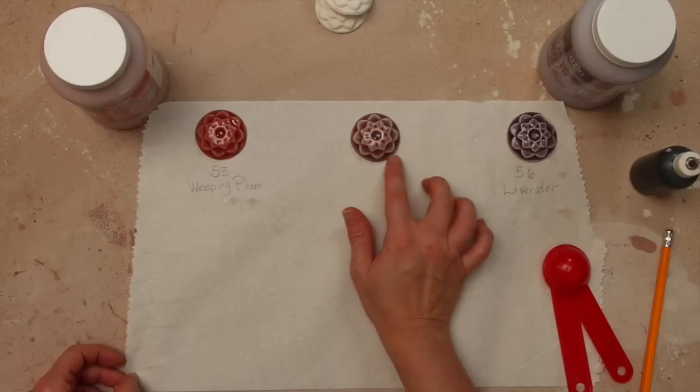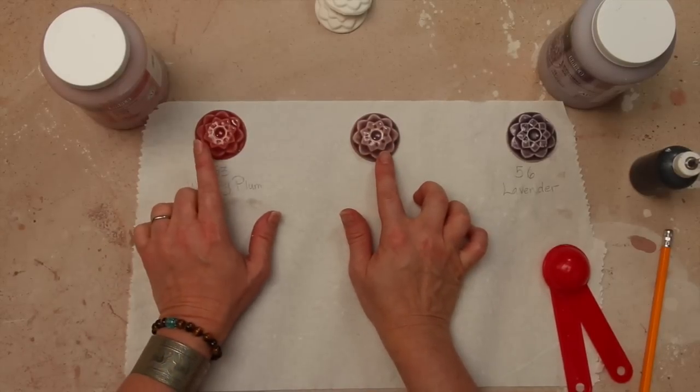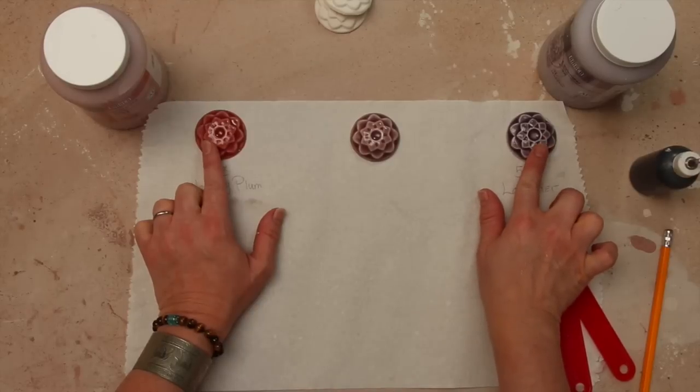This aubergine color was produced from a 50-50 mix of Weeping Plum Celadon on the left and Lavender Celadon on the right.